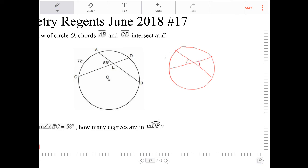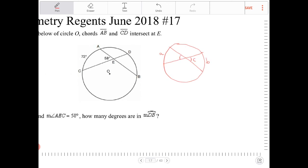If I call the intercepted arc over here on the left A, and the intercepted arc on the right there B, and the vertical angles that's opposite of those arcs C, as it turns out, angle C is equal to the average of those intercepted arcs.